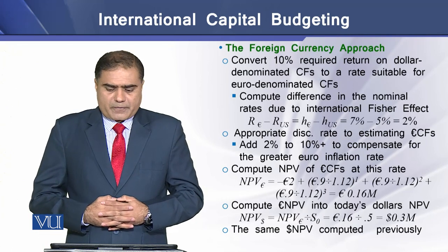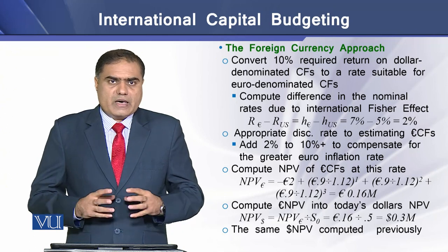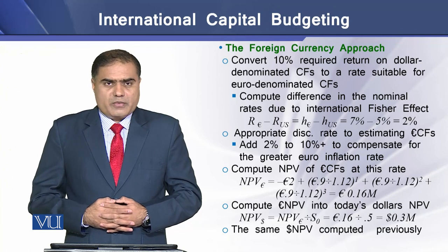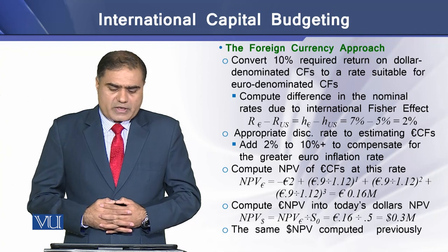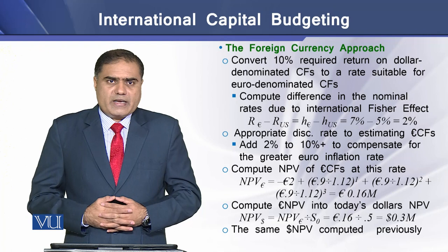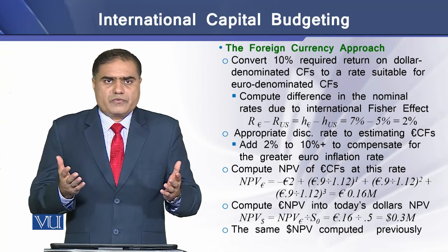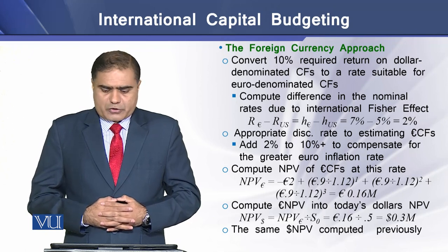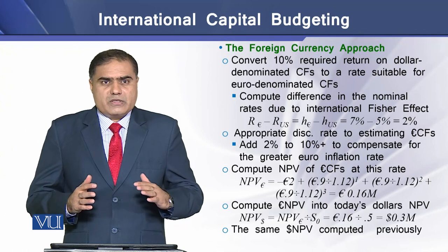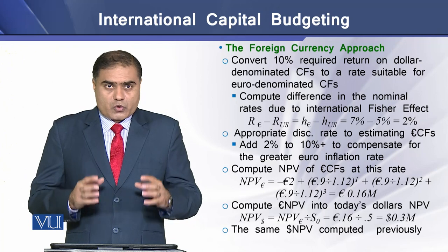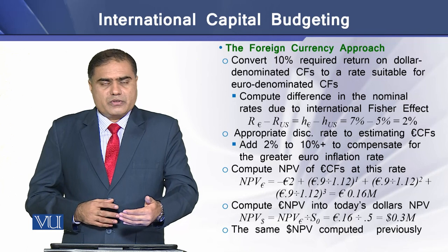In the second approach, the foreign currency approach, we follow a more detailed procedure. In the first step, we convert the 10% required return on dollar denominated cash flows to a rate suitable for euro denominated cash flows. For that purpose, we first determine the difference due to the international Fisher effect between the two risk-free rates of the US and France, which is 2%. We then add this difference to our required rate of return to compensate for the greater euro inflation rate, as inflation is higher in France. We then compute the net present value of euro denominated cash flows at this 12% discount rate.